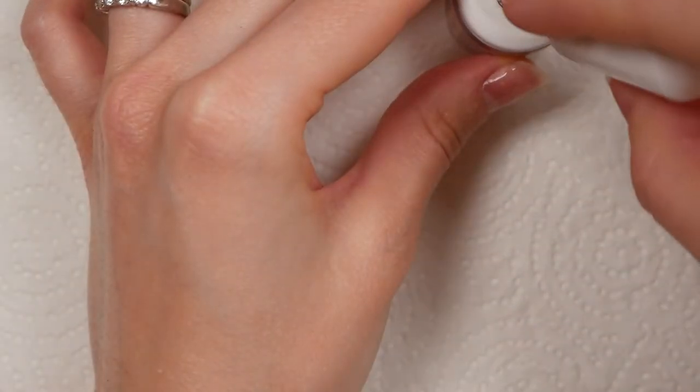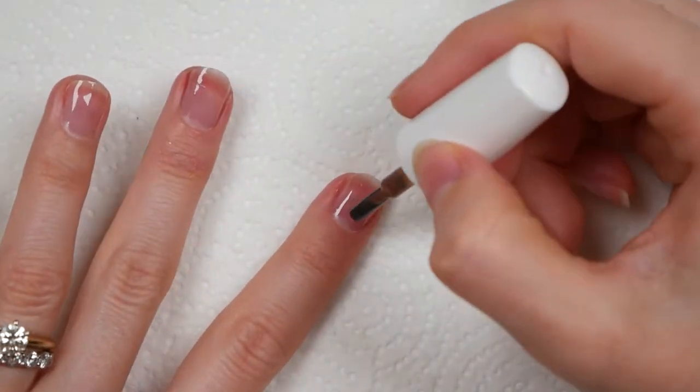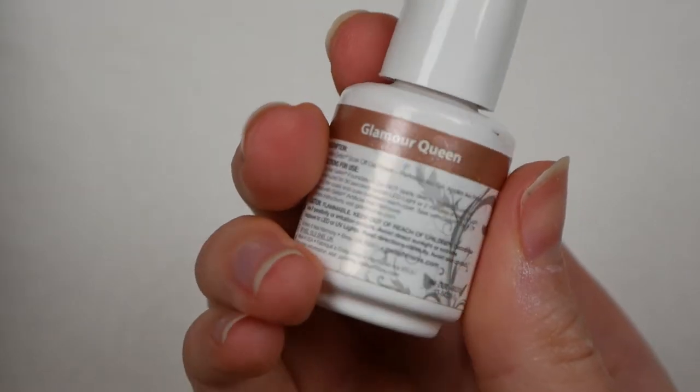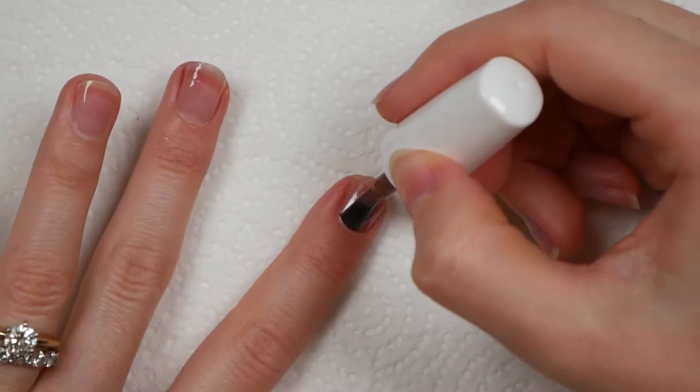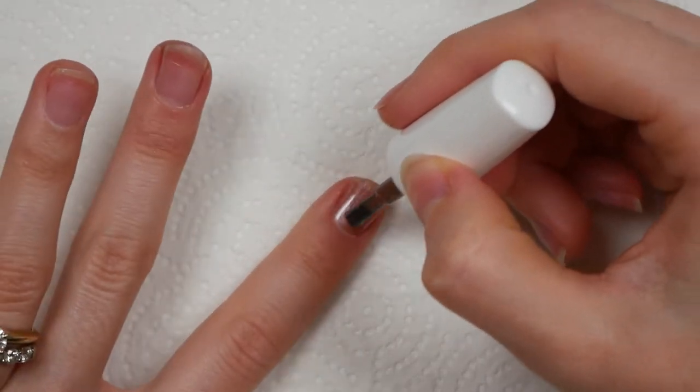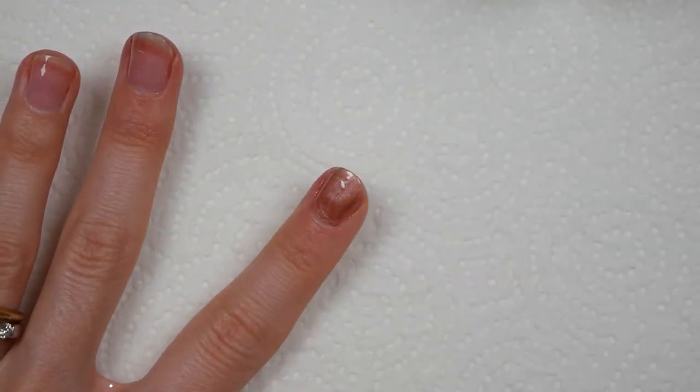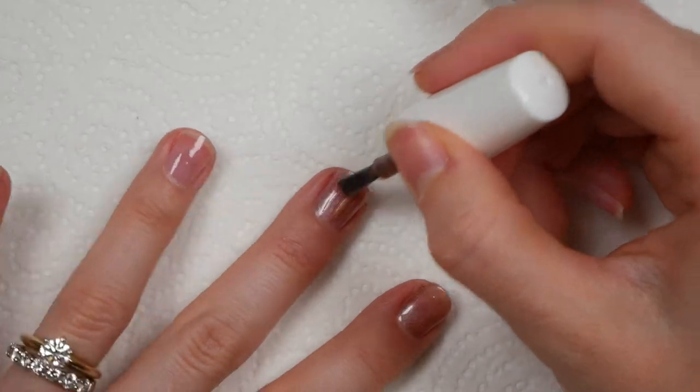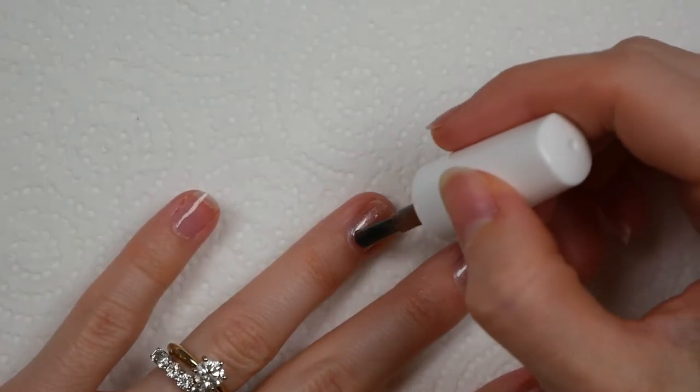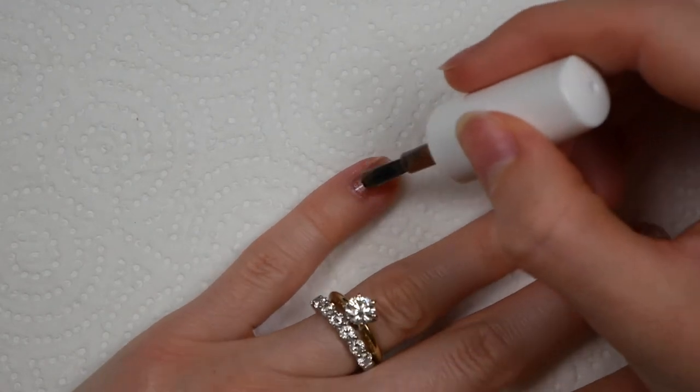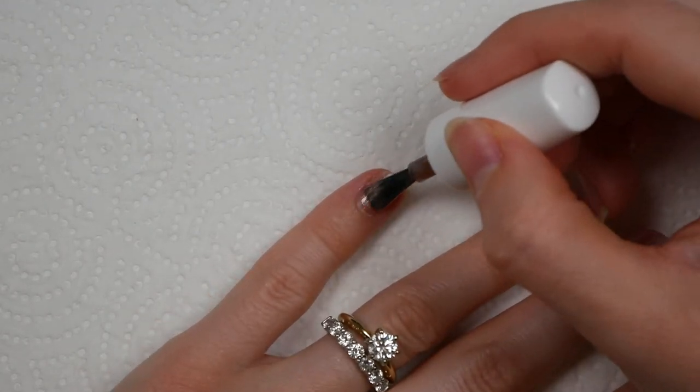Once the base coat was done, I painted on the first layer of gel polish. So this one is by the brand Gelish in the color Glamour Queen. And when you're painting on gel polishes, you want to paint thin layers and be very careful just not to flood the corners of your nail. If the polish touches any of the sides, then it'll end up lifting and it just won't last as long as it should. But if you do end up getting any on the corners of your nails, you can just remove this with nail polish remover before you put it under the lamp.